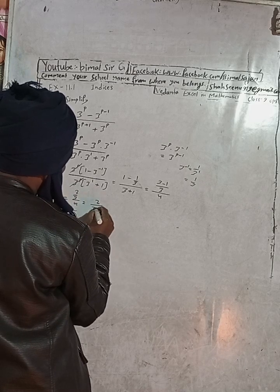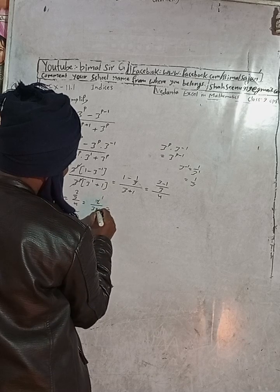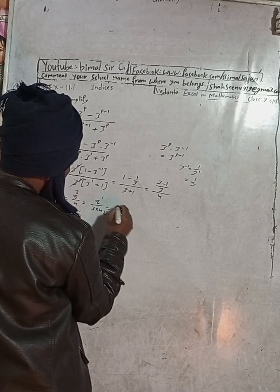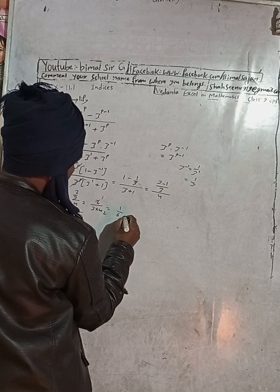So this 2 is above, and this 3 into 4 will come down here. So this is equal to 2 here, 2 to the power, so this is 1 by 3 to the power, so this is 1 by 3 to the power 6. So 1 by 6 is the answer.